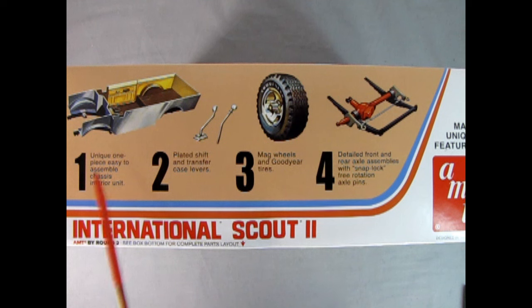Step one, we have a unique one-piece easy-to-assemble chassis interior unit. Two, we have plated shift and transfer case levers. Three, mag wheels and Goodyear tires. Number four, detailed front and rear axle assemblies with snap-lock free rotation axle pins.